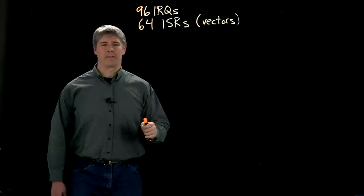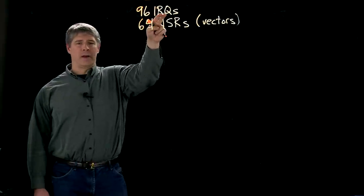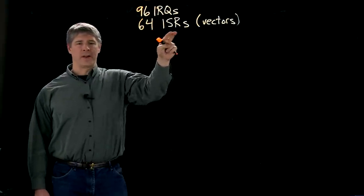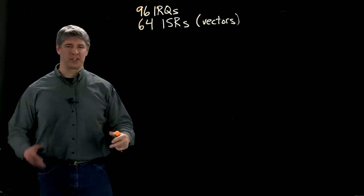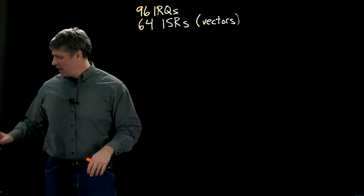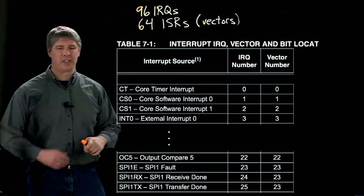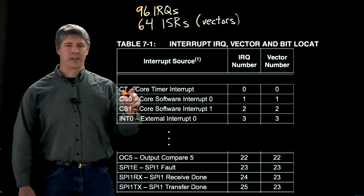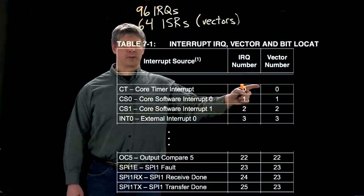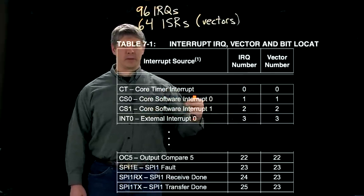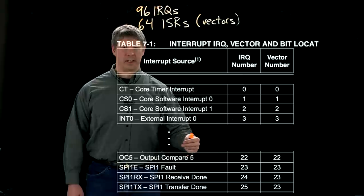Because we have more interrupt request events than we have vectors to hold interrupt service routines, that means some of the IRQs have to share the same interrupt service routine. And we can see that from this table in the data sheet. It tells us here that the core timer interrupt gets IRQ number zero as well as vector number zero. Some other interrupts here, and we continue down the table.